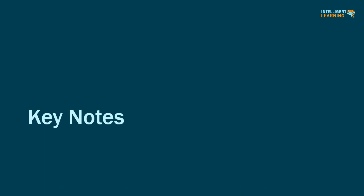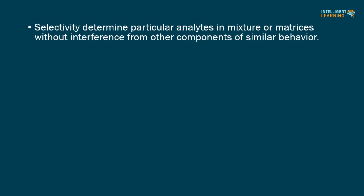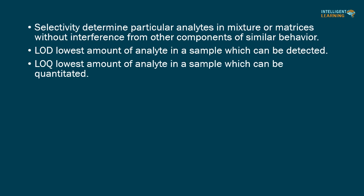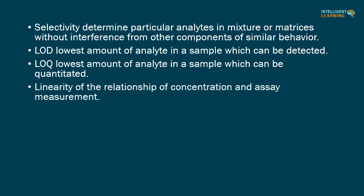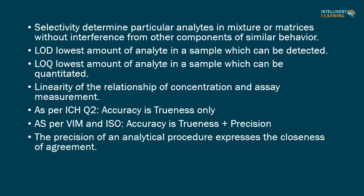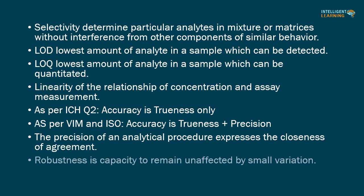Keynotes of this video: Selectivity — determines particular analytes in a mixture or matrix without interference from other components of similar behavior. LOD — lowest amount of analyte in a sample which can be detected. LOQ — lowest amount of analyte in a sample which can be quantitated. Linearity — the relationship between concentration and assay measurement. As per ICH Q2, accuracy is trueness only; as per VIM and ISO, accuracy is trueness plus precision. Precision expresses the closeness of agreement. Robustness is the capacity to remain unaffected by small variations.